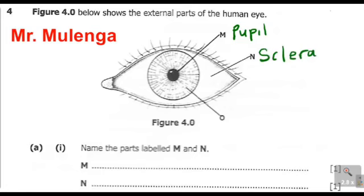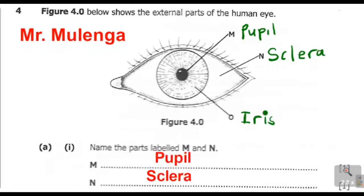Then the part labeled O — in case they ask you in an exam, this part labeled O is called the iris. So now we can write the answers here. We have identified the part labeled M as the pupil, and the part labeled N as the sclera. So we have answered question A1. We now move on to question A2.